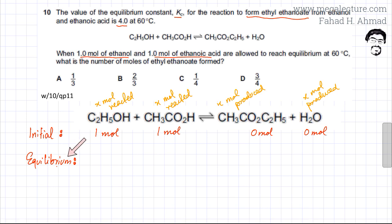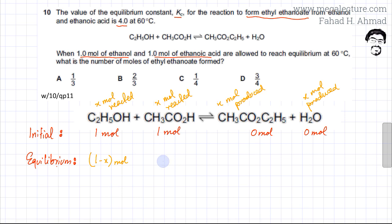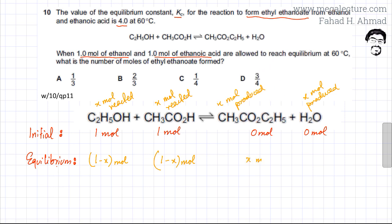Now for the equilibrium moles in terms of x: initially we had one mole of ethanol, so if x reacted, the moles of ethanol left at equilibrium would be (1 − x). Similarly, ethanoic acid started at one mole, so (1 − x) moles remain. For ethyl ethanoate, we started with zero moles, so x moles are present at equilibrium. The same applies to water — starting from zero, x moles are present at equilibrium.